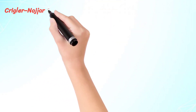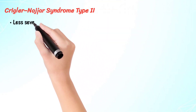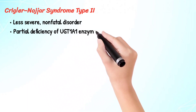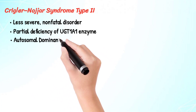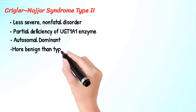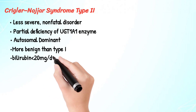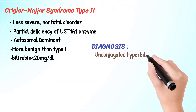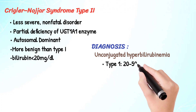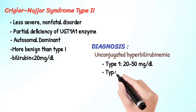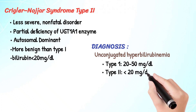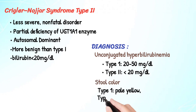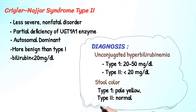Crigler-Najjar syndrome Type 2 is a less severe, non-fatal disorder with partial deficiency of UGT1A1 enzyme. It is autosomal dominant and more benign than Type 1, with bilirubin levels less than 20 mg/dL. For diagnosis: unconjugated hyperbilirubinemia in Type 1 is 20–50 mg/dL; in Type 2, less than 20 mg/dL. Stool color in Type 1 is pale yellow; in Type 2 it is normal.